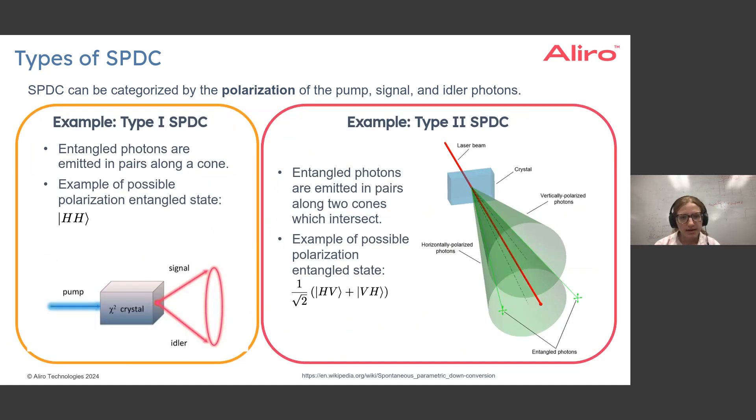If we want to look at examples of Type 1 and Type 2 spontaneous parametric down conversion just to visualize this even more concretely, I've included some schematics.